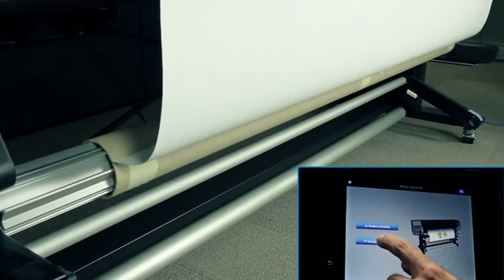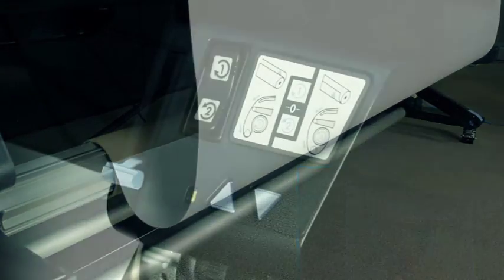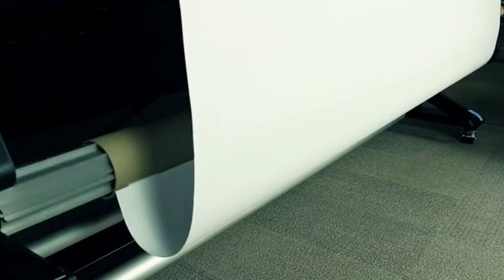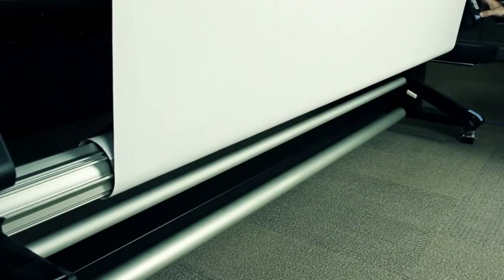Press the button on the front panel to advance the substrate, creating a loop. Press the blue arrow on the take-up reel motor to rotate the reel one full turn. This will help to support the weight of the tension bar.